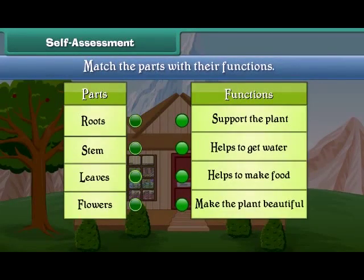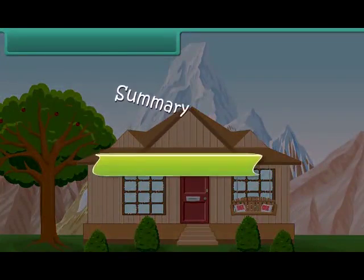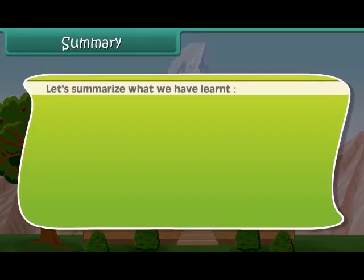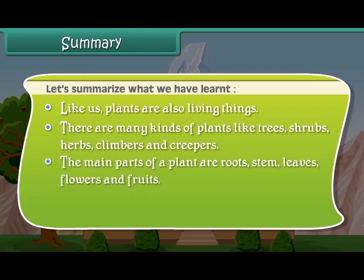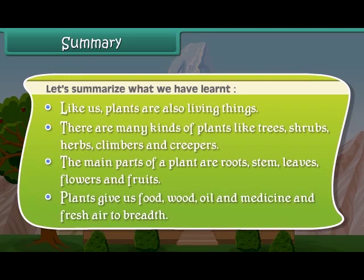Friends, now let's check your understanding — match the parts of plants with their functions. Now, let us summarize what we have learned so far. Like us, plants are also living things. There are many kinds of plants: trees, shrubs, herbs, climbers, and creepers. The main parts of a plant are roots, stem, leaves, flowers, and fruits. Plants give us food, wood, oil, medicine, and fresh air to breathe.